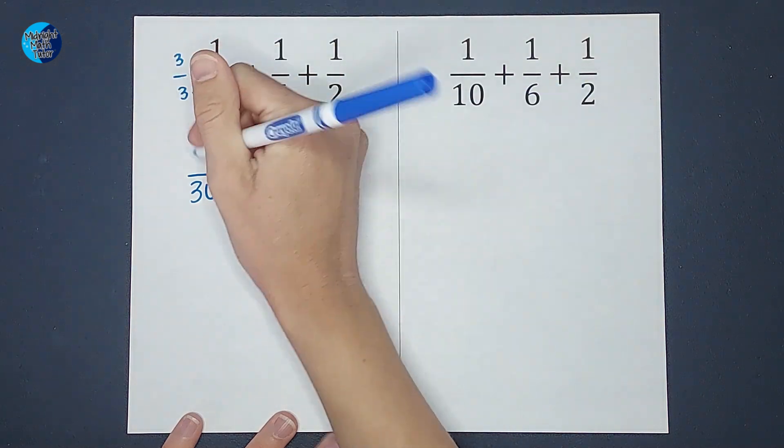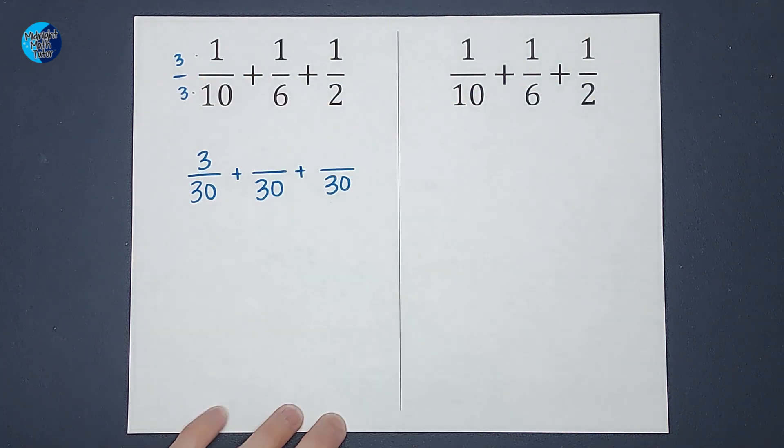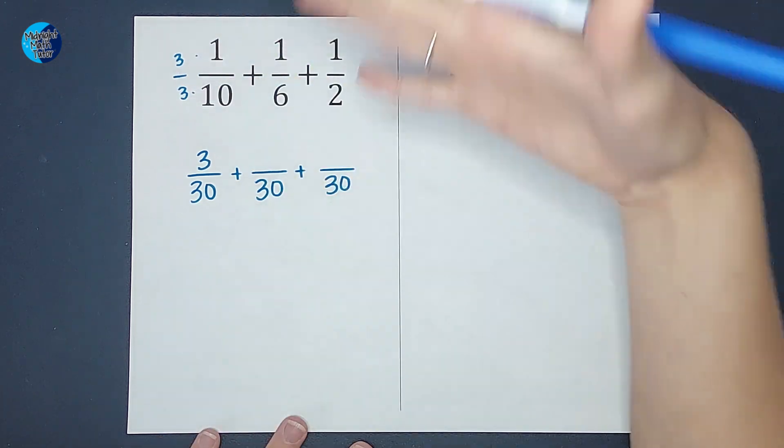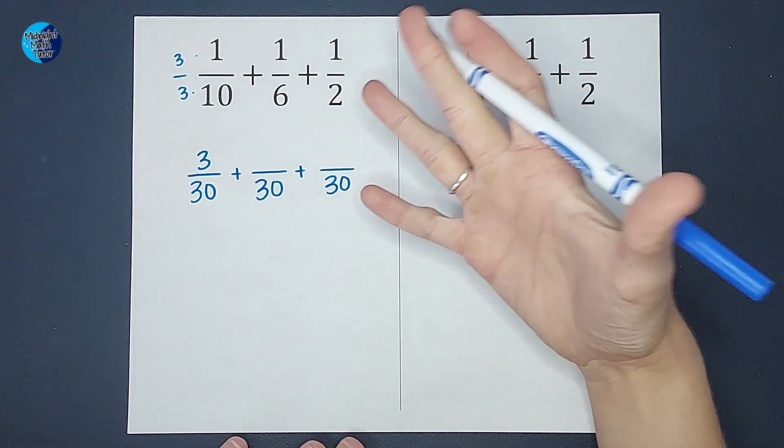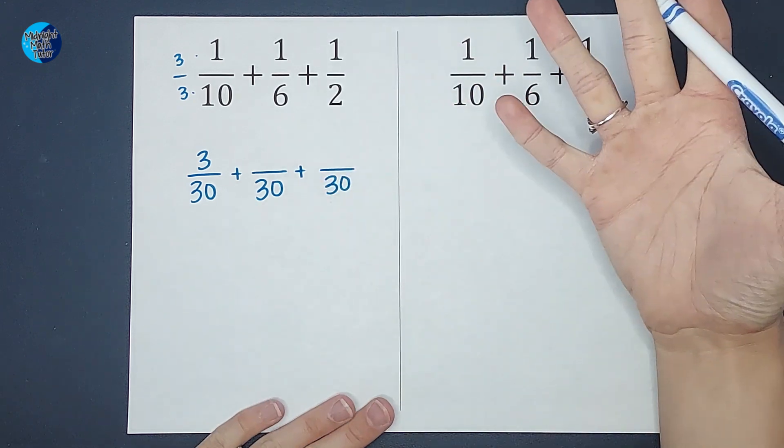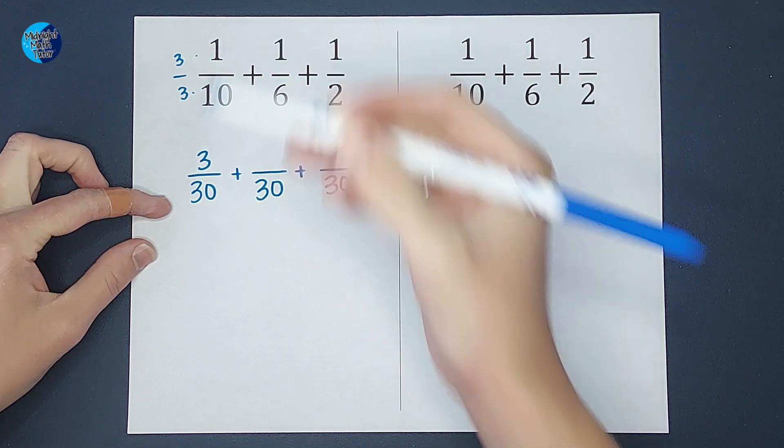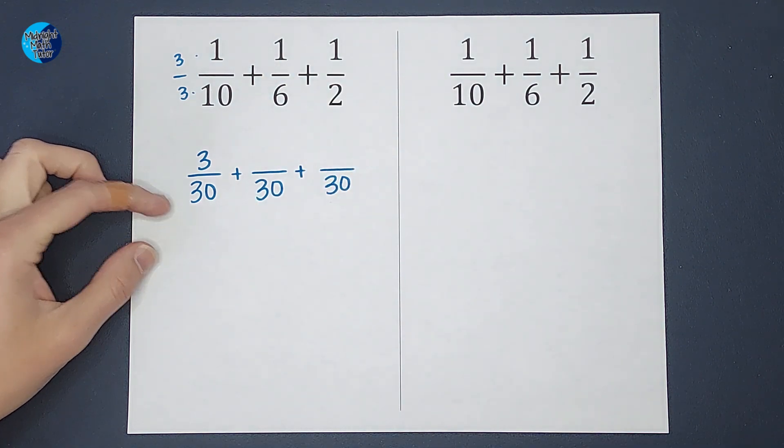Now, why can I do that? Because three over three simplifies down to one. So I'm really just multiplying by one. It's just a weird looking one. So if I were to simplify three over 30, it would be the same as one over 10.